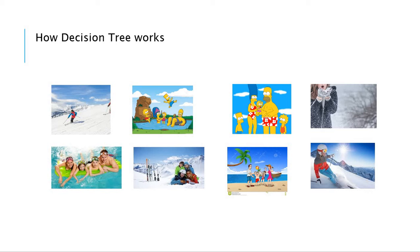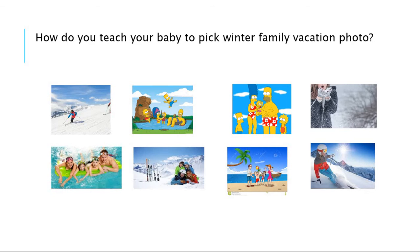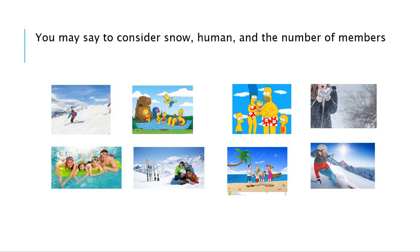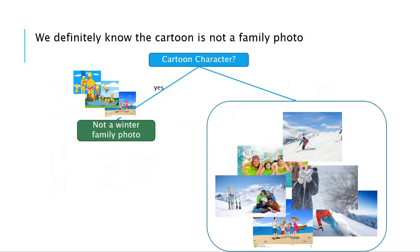Hi everyone. Let's take a brief look at how the decision tree works. Suppose you want to teach your baby to pick a winter family vacation photo. You may consider snow, human, and the number of members from the pictures to teach your baby.